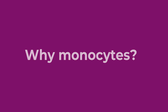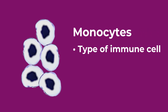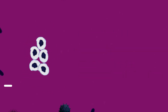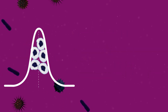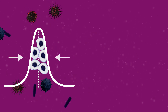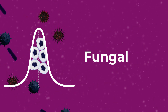So why monocytes? Monocytes are a type of immune cell — a white blood cell — that make up a large portion of the body's immune response to infection. They are often the first line of defense when a foreign pathogen enters the system. MDW is a measurement of increased monocyte cell activity in response to bacterial, viral, or fungal infections.